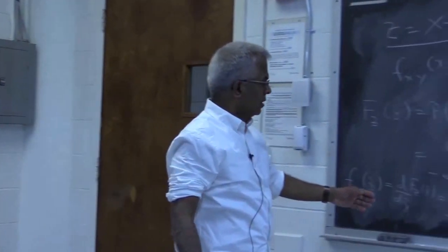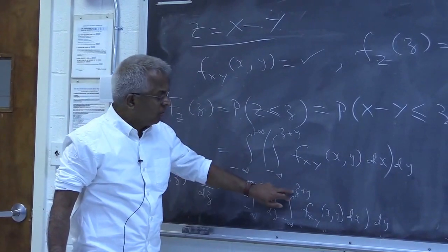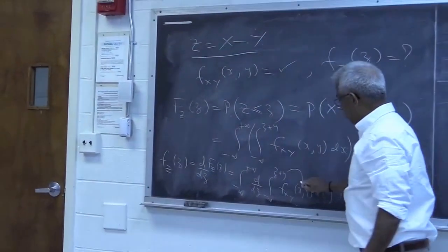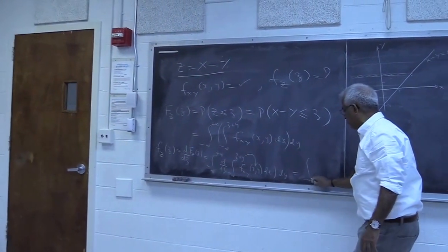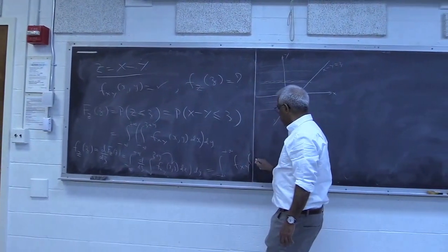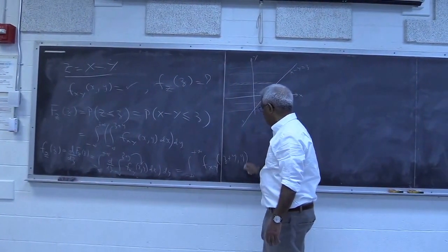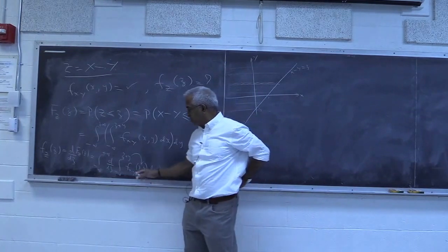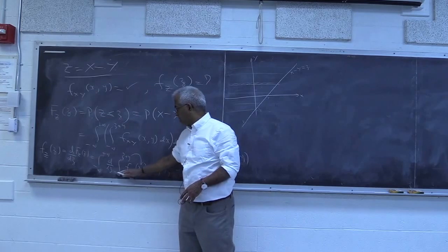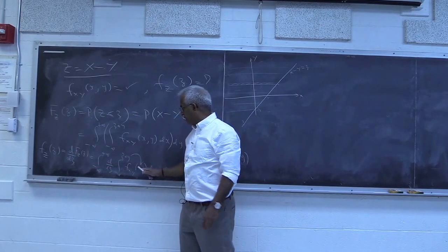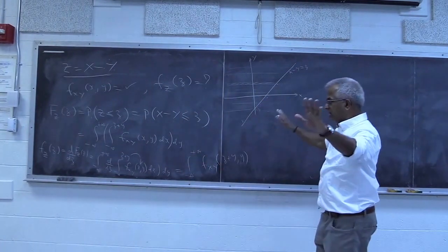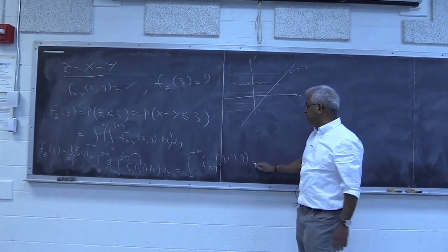Applying the rule here: the derivative of the top limit with respect to z is 1, so we get the integral from minus infinity to plus infinity of 1 times f(x,y) evaluated at x = z+y, giving f(z+y, y). The derivative of the bottom limit (minus infinity) is constant, so that term is 0. The integrand is not a function of z, so the third term is also 0. So the density of z is the integral from minus infinity to plus infinity of f(z+y, y) dy.